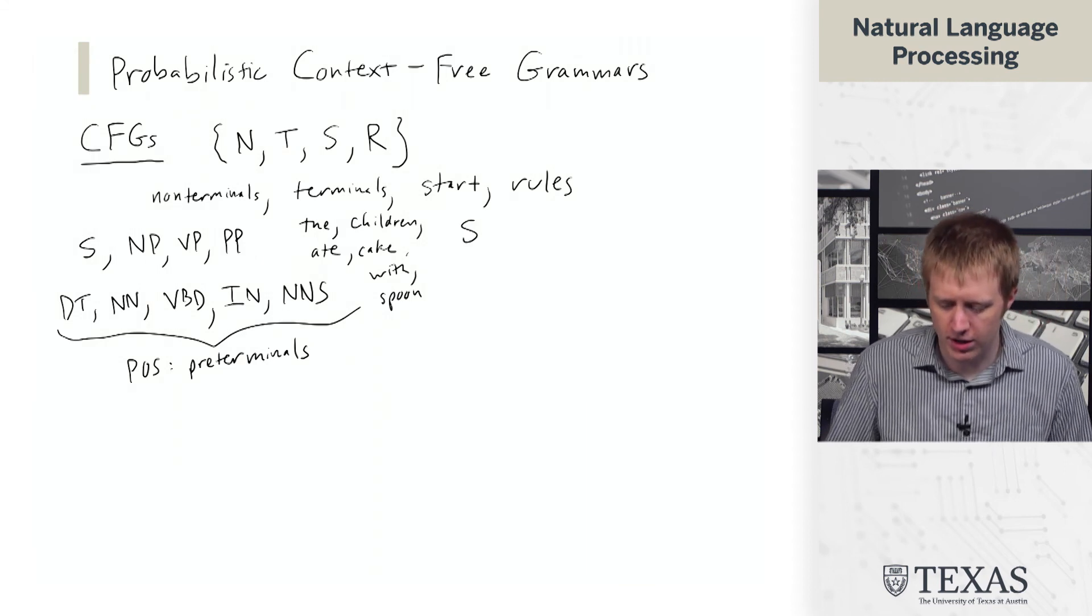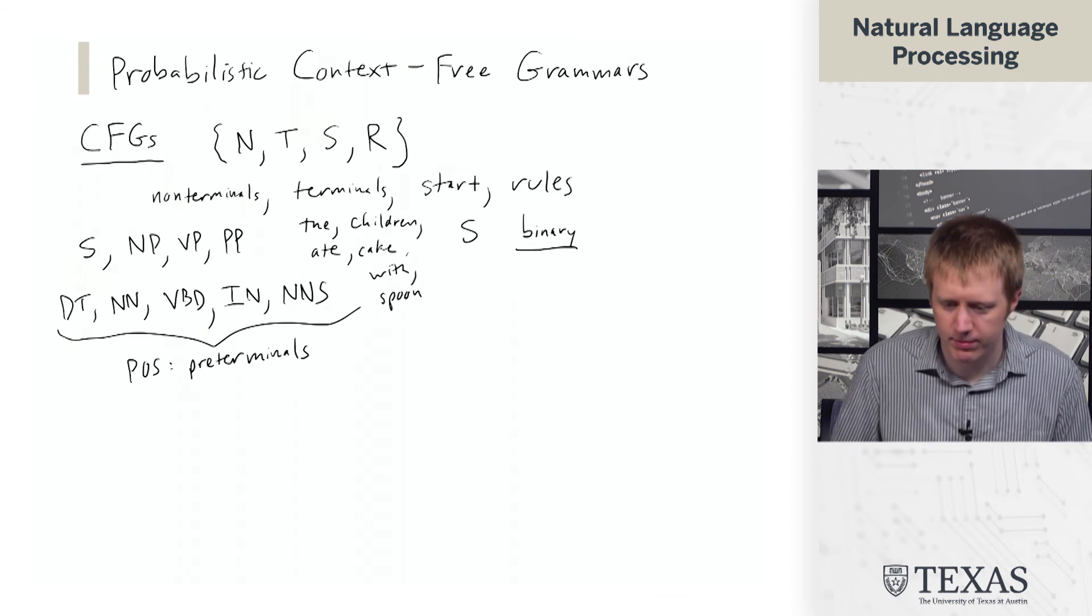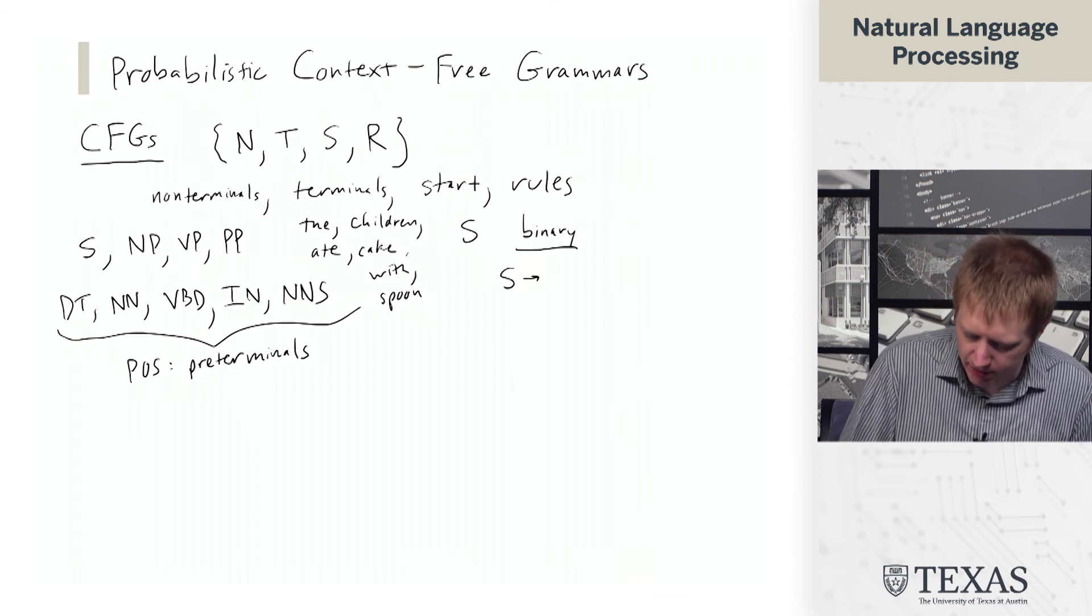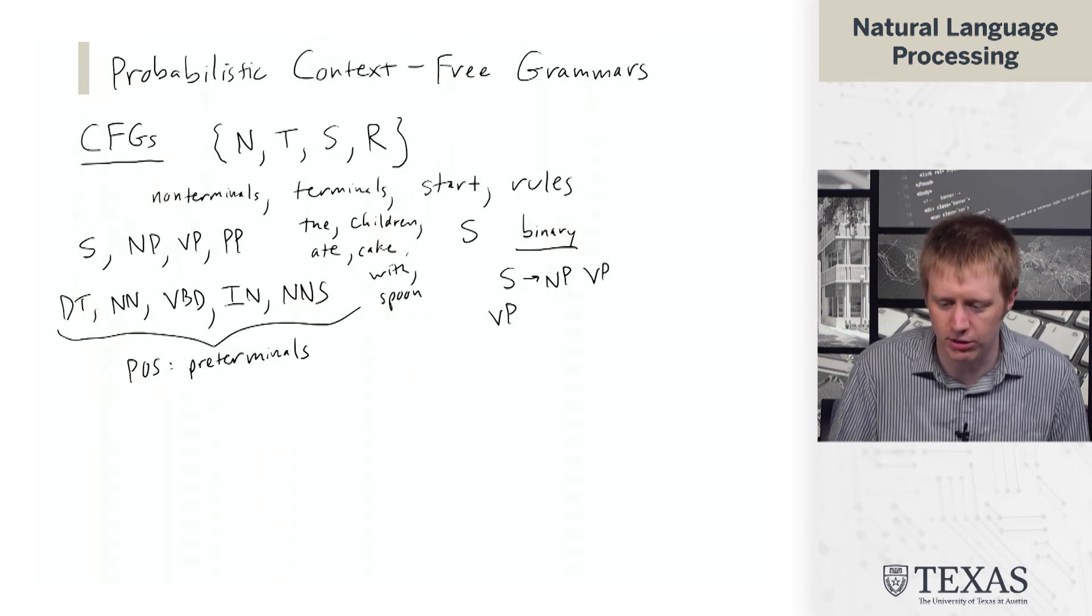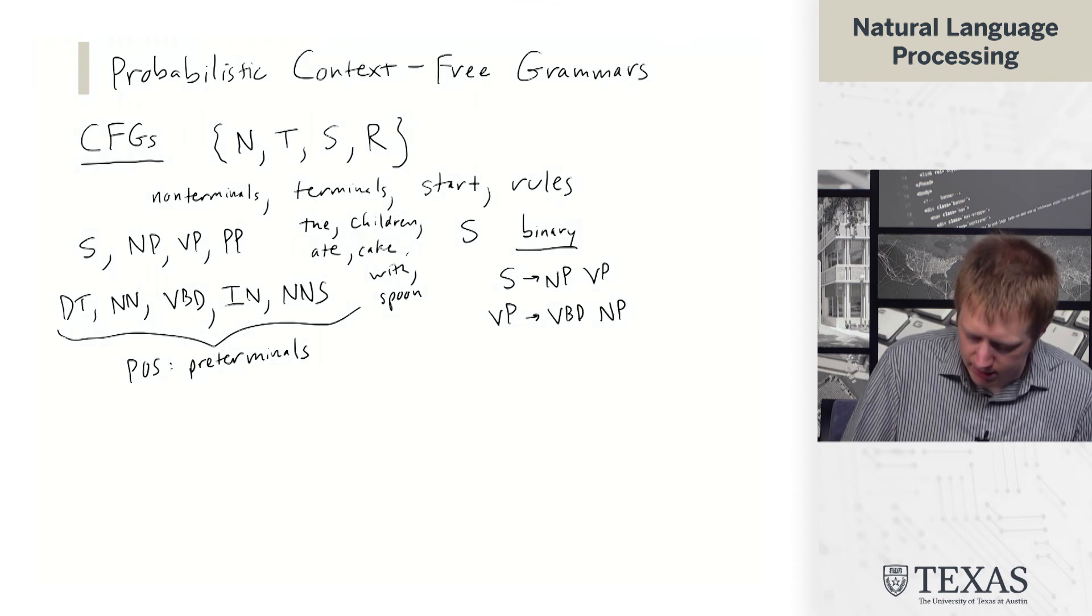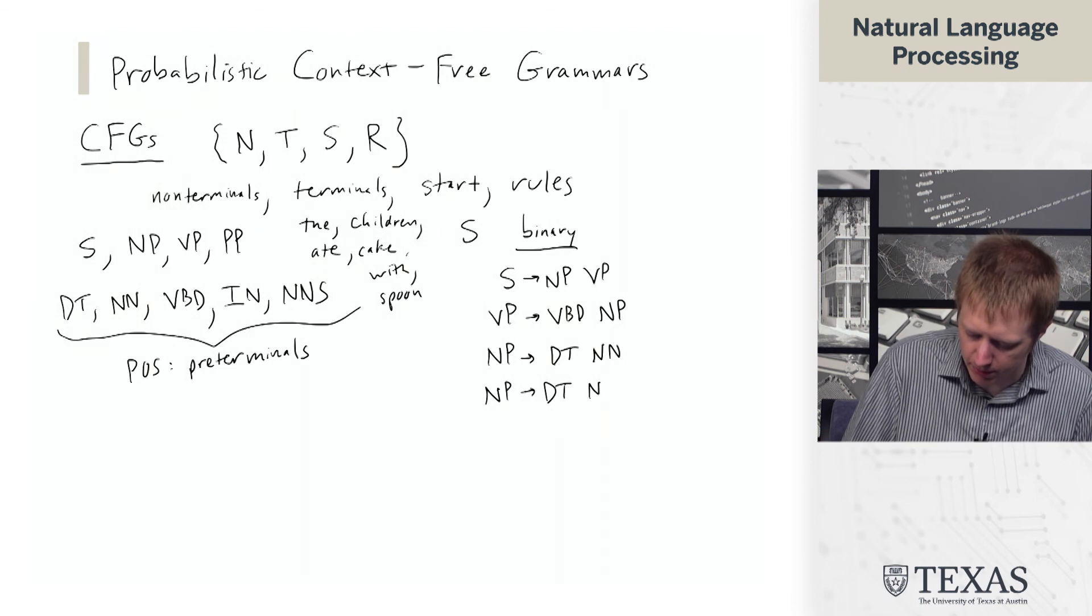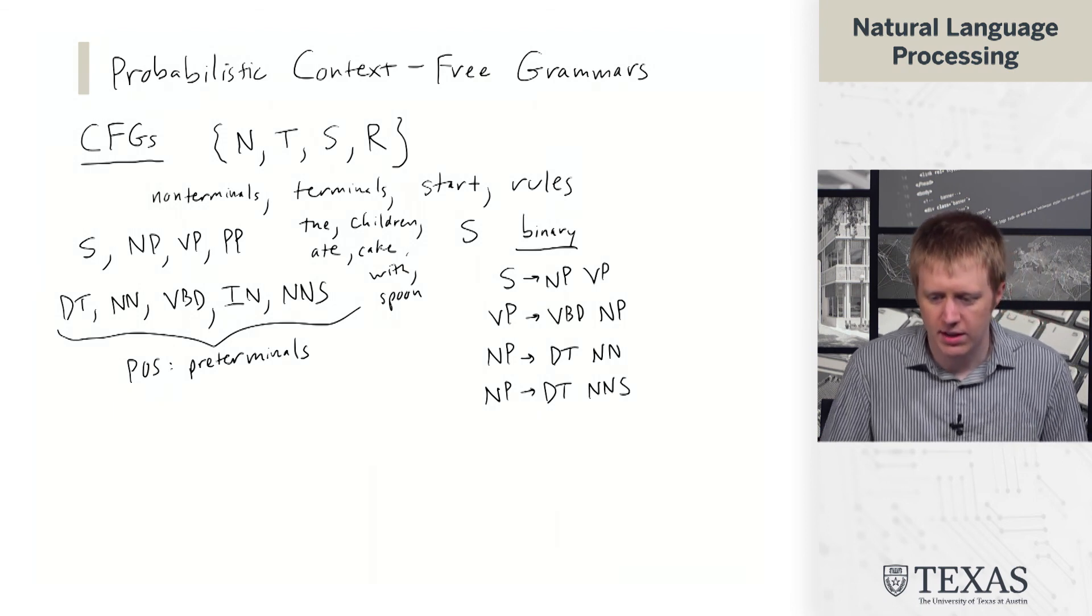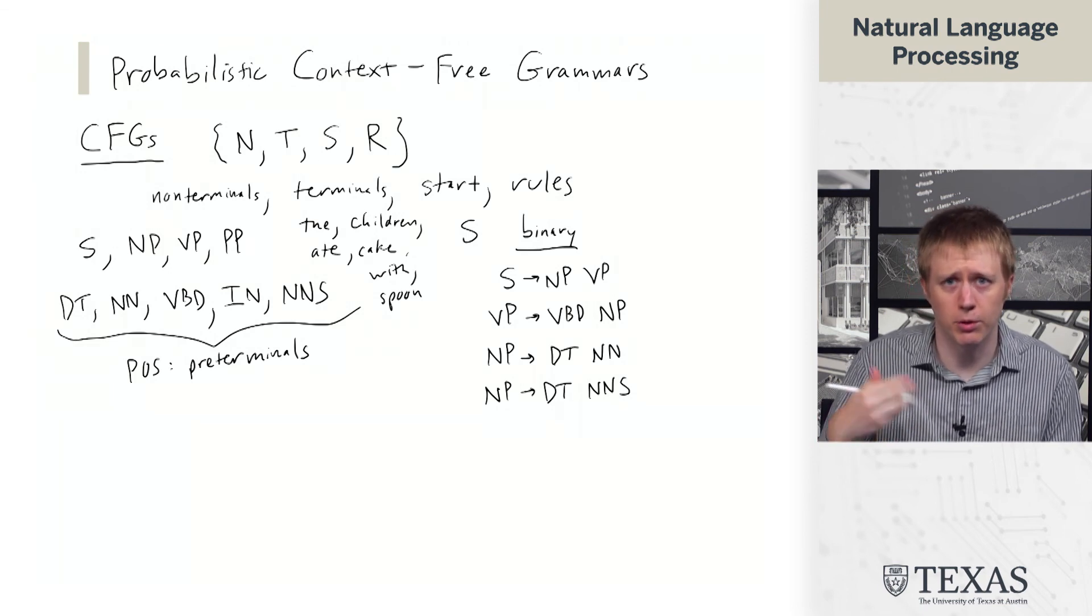The rules consist of two types. We have binary rules, which we write with the source symbol on the left and the yield on the right. We can have generally a bunch of different productions for each non-terminal symbol. These are binary rules because each symbol rewrites into two symbols.